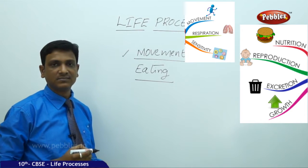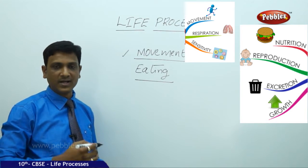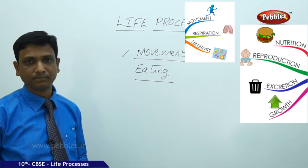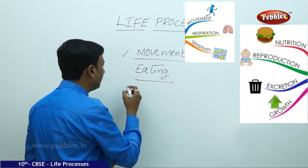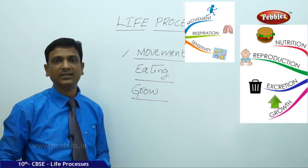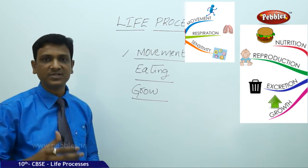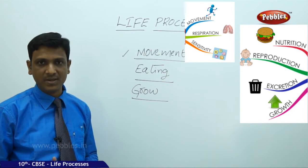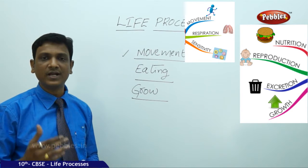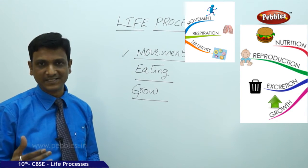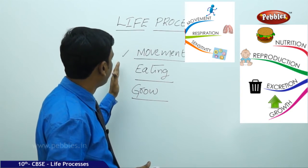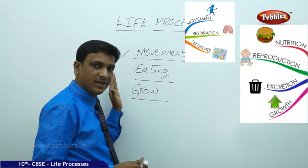Growth is another feature. Living things grow — that means they increase in size from time to time. A small newborn baby grows into a kid, from a kid to an adolescent, from an adolescent to an adult. So movement, eating, and growing are features by which we can distinguish living from non-living things.